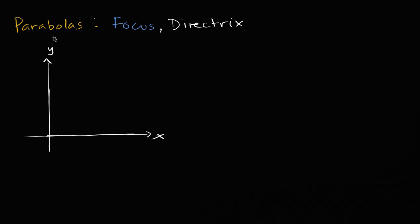A parabola can be defined as the set of all points that are equidistant to a point and a line. That point is the focus of that parabola, and that line is the directrix of the parabola. So what am I talking about?